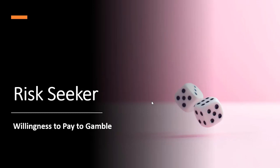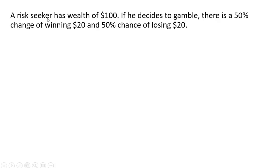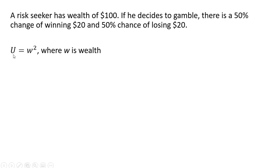In this video we're going to look at a risk seeker's or risk lover's willingness to pay to gamble. A risk seeker has wealth of $100. If he decides to gamble there's a 50% chance of winning $20 and a 50% chance of losing $20. The utility function for this individual is given by u equals w squared, where w is wealth.